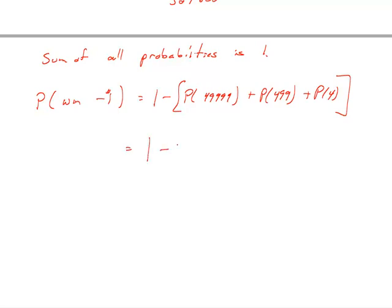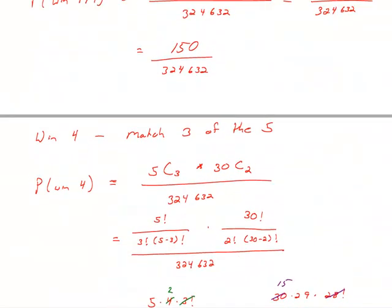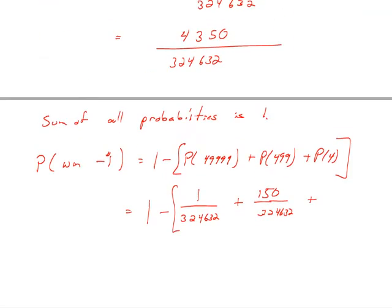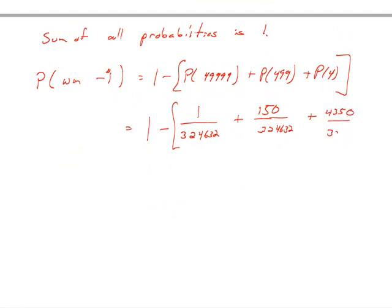So I'm going to take the 1 minus each of those probabilities. So I had 1 over 324632. The probability of 499 was 150 over that number. And the probability that we had 4 we just found was 4,350 over 324632. So I'll be right back after I simplify it. So this gives me a result of 320,131 over 324632. And that's just 1 minus the sum of these three fractions, so you can verify that.